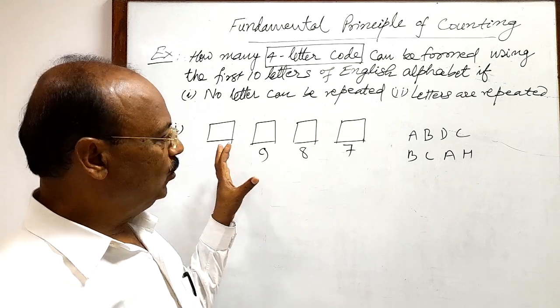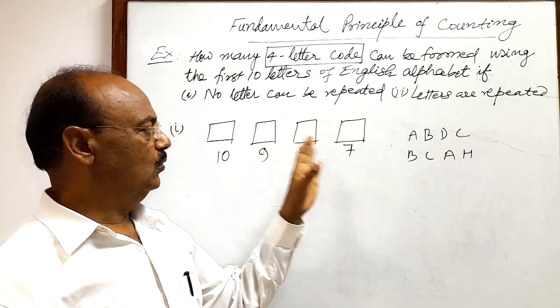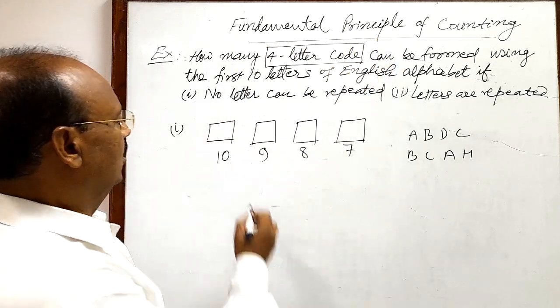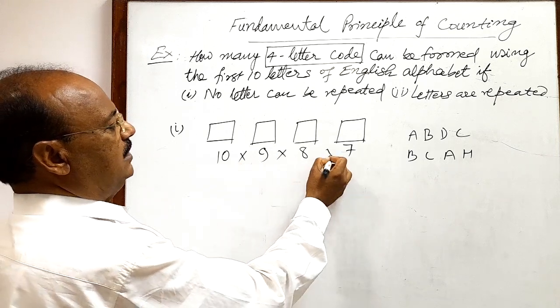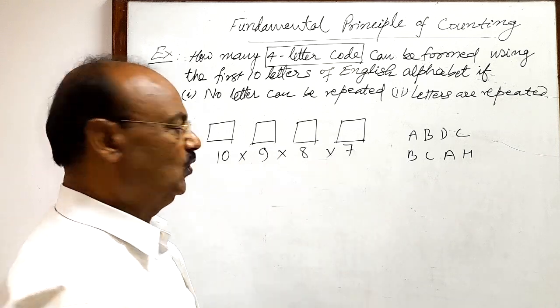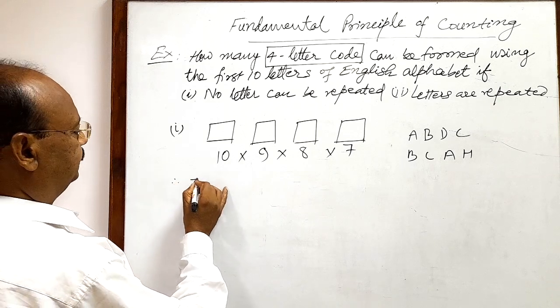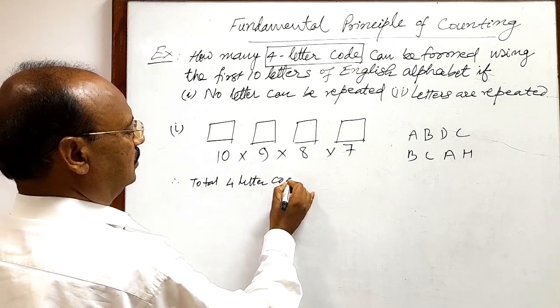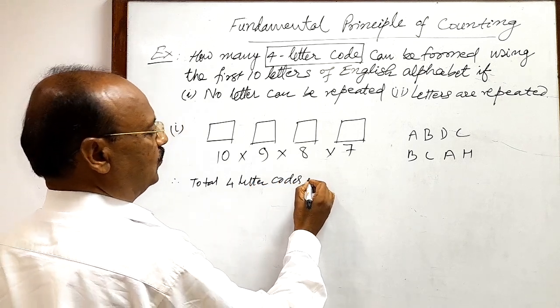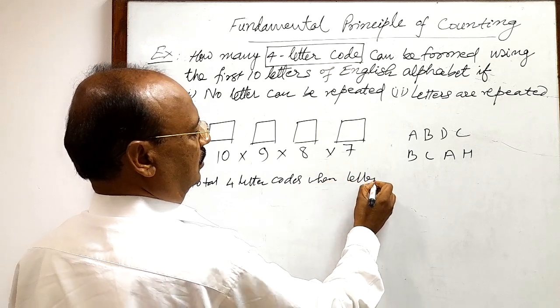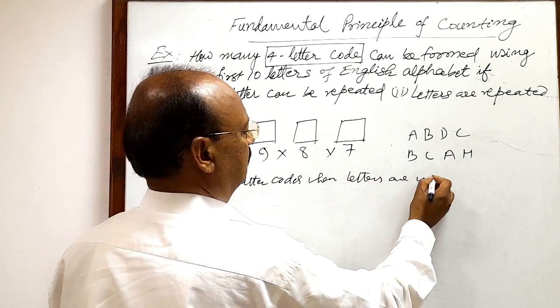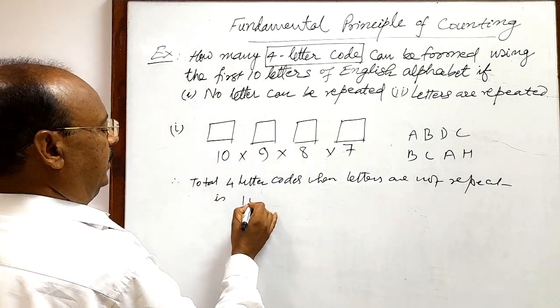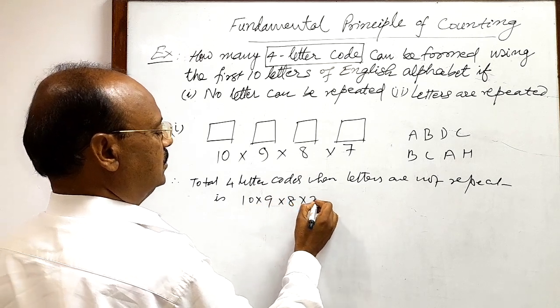So, how many total possibilities of four letter codes is here? By simply fundamental principle of counting, we will multiply these numbers. Therefore, you can write that total 4 letter codes when letters are not repeated is 10 into 9 into 8 into 7.